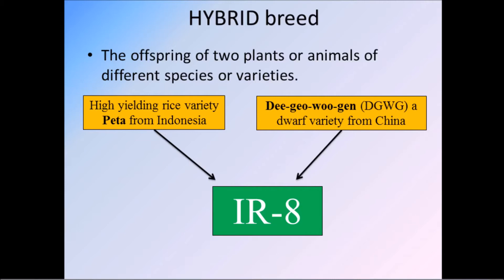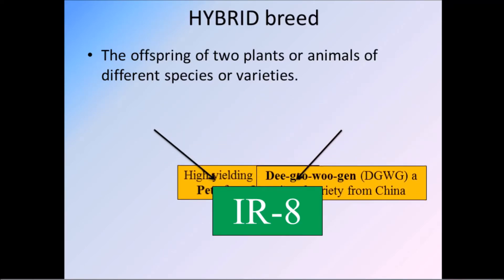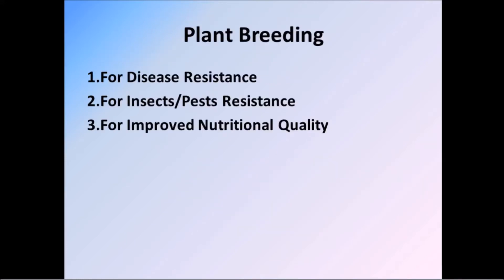What is a hybrid breed? The offspring of two plants or animals of different species or varieties is called a hybrid. For example, IR-8 rice is a hybrid of two varieties: Peta, a high-yielding rice variety from Indonesia, and Dee-geo-woo-gen (DGWG), a dwarf variety from China. These two were bred to produce IR-8.